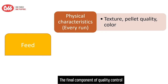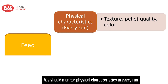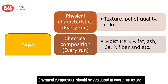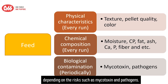The final component of quality control involves the feed itself, and this is quite similar to quality control for ingredients. We should monitor physical characteristics in every run to determine any abnormal feed textures, odor, and color. Chemical composition should be evaluated in every run as well. Biological contamination can be analyzed periodically depending on the risk level, such as mycotoxin and pathogen testing.